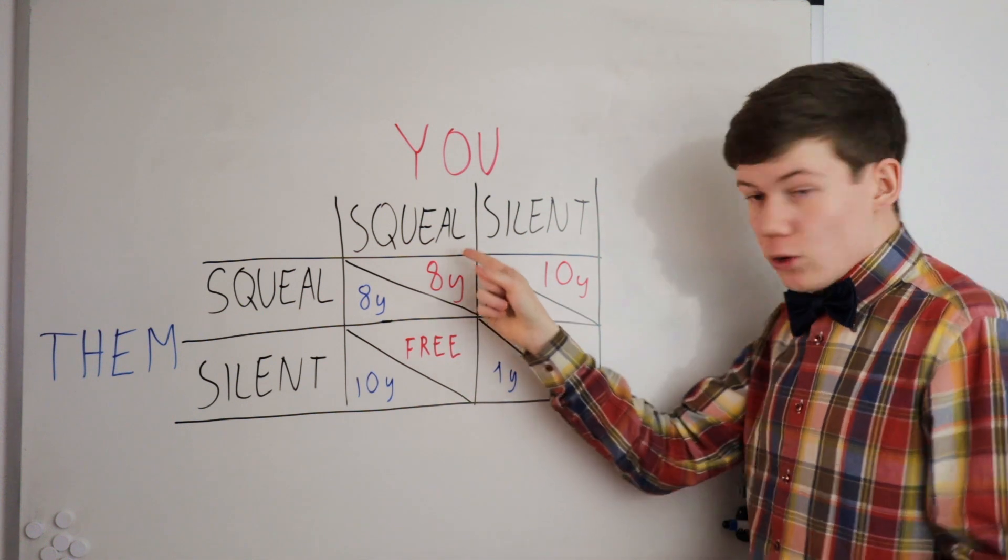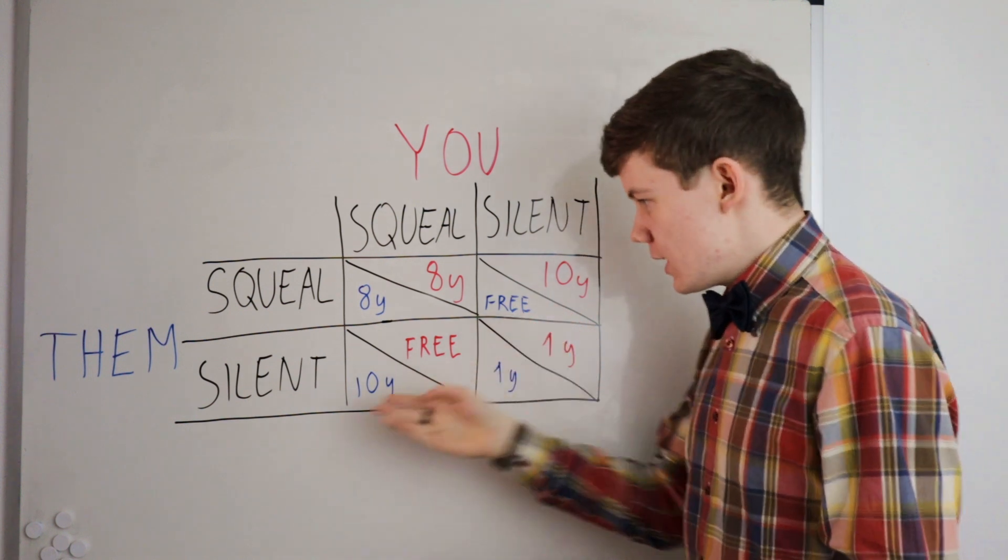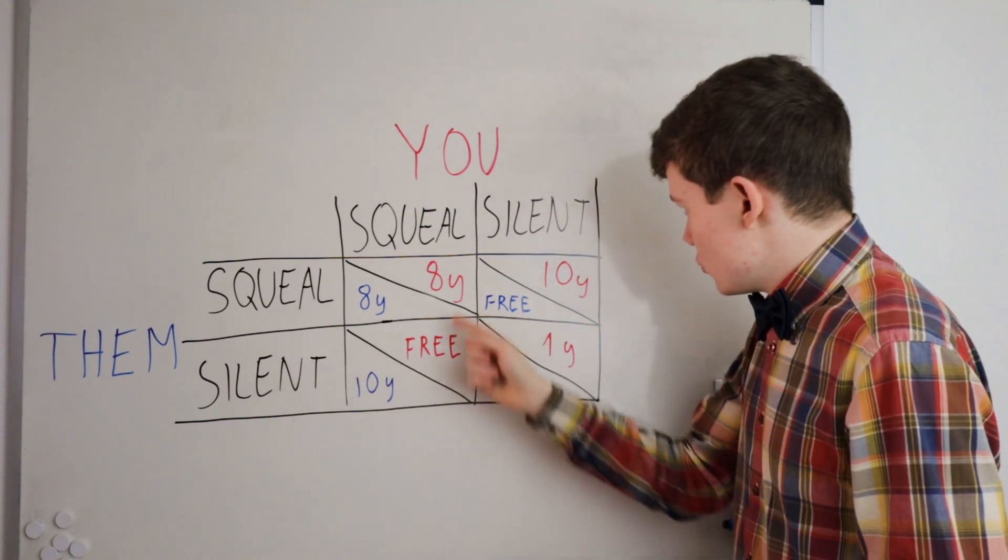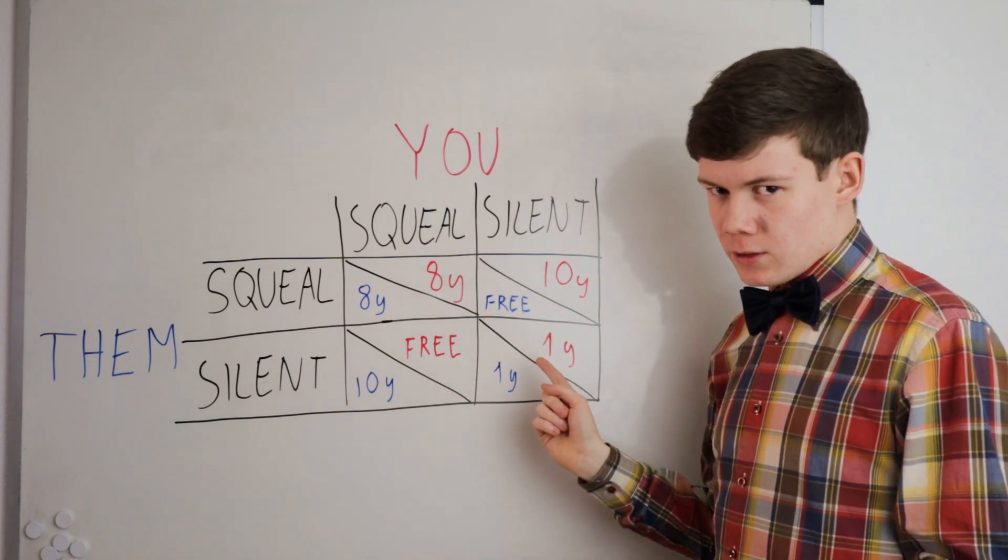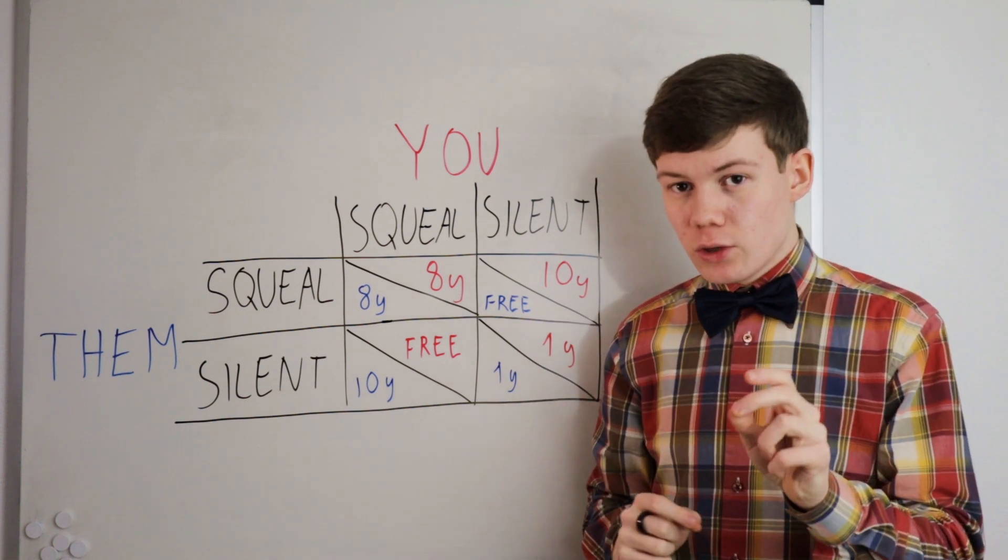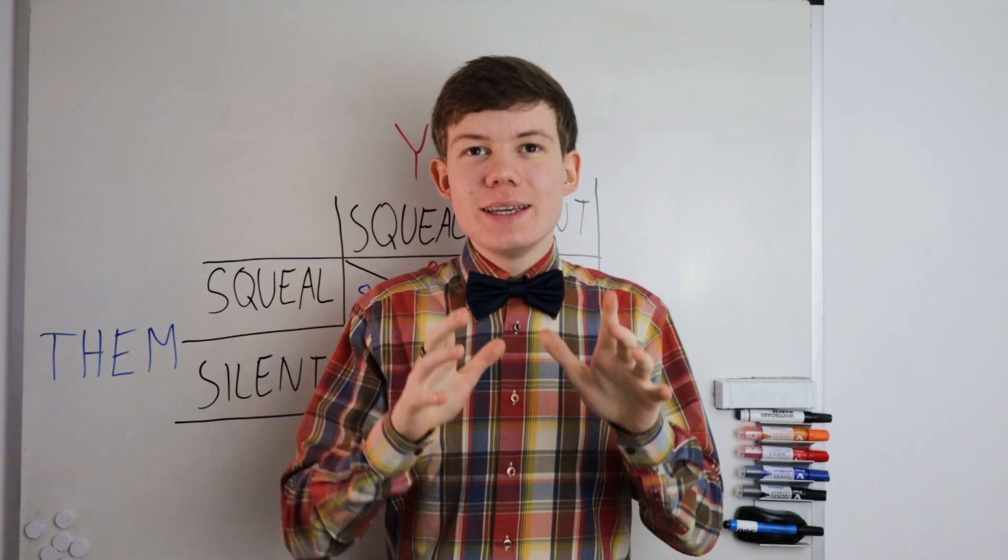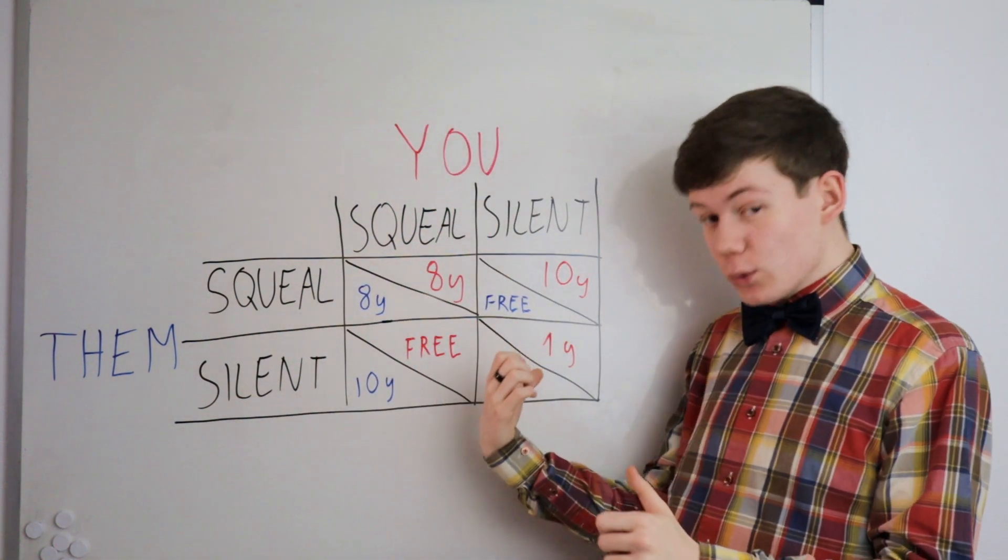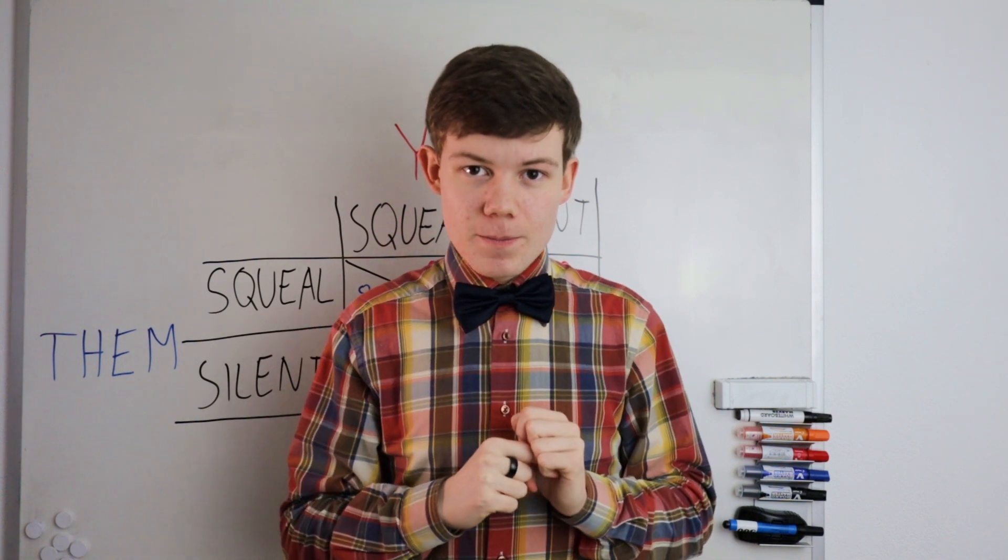Let's say they go for squeal. Well, the best option for you is to also squeal, because getting eight years in prison is better than getting ten years in prison. Let's say they go silent. Well, the best option for you is to squeal again, because going free is better than getting one year in prison. No matter what your partner does, the best thing for you to do is to squeal. And so goes for your partner. You are both getting eight years in prison, when you could only get one year in prison, because neither of you can trust the other person to stay silent.